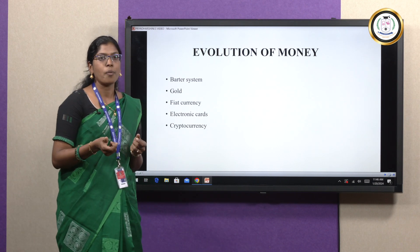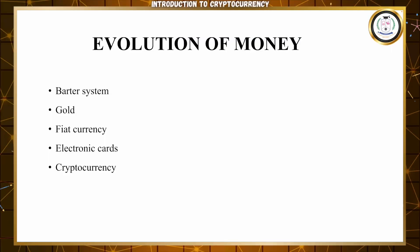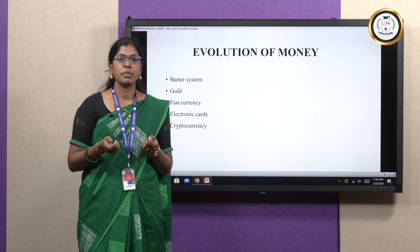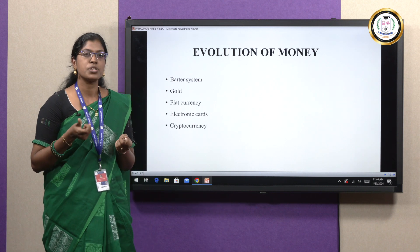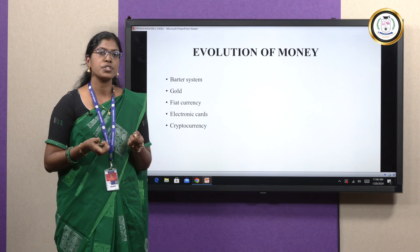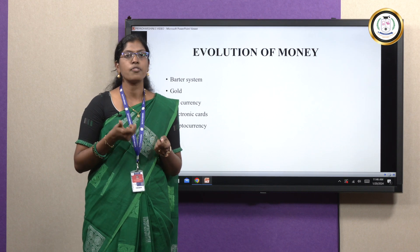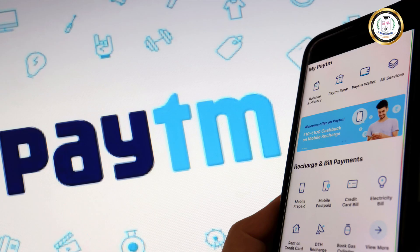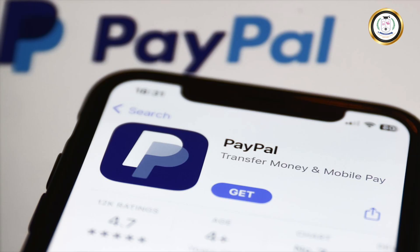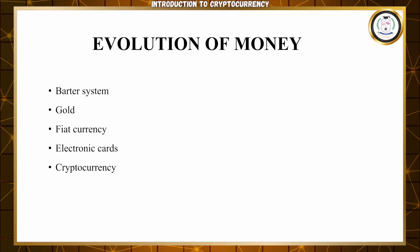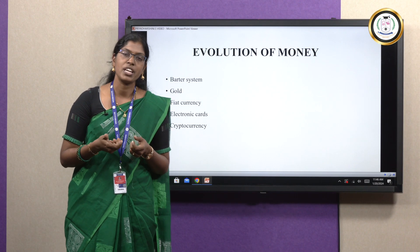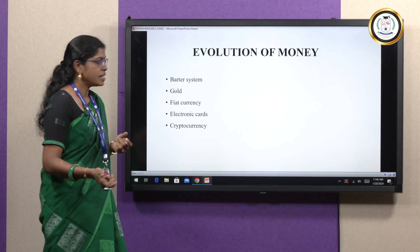Fiat currency is issued by our government and RBI. Then, in the 1990s, we came across the technology boom that gave us electronic cards — the debit and credit cards issued by banks. We also came to digital transactions, known as UPI payments, with apps such as Google Pay, PhonePe, and PayPal. Then, in 2000, comes cryptocurrency — a technology boom in the new era.